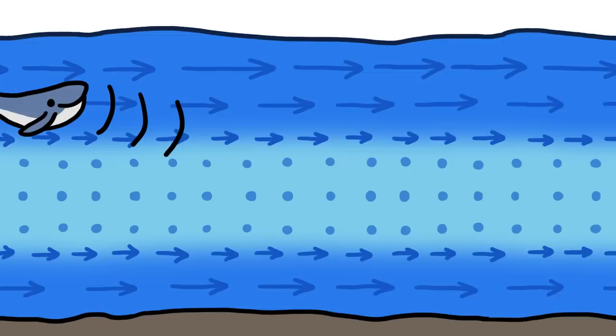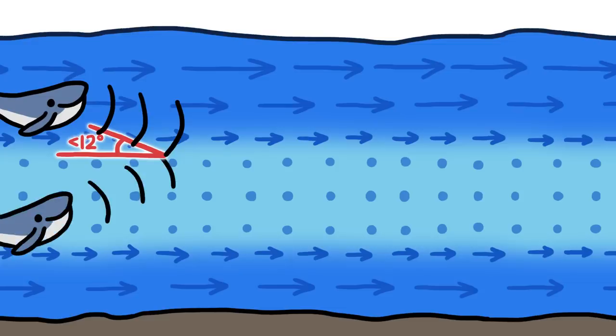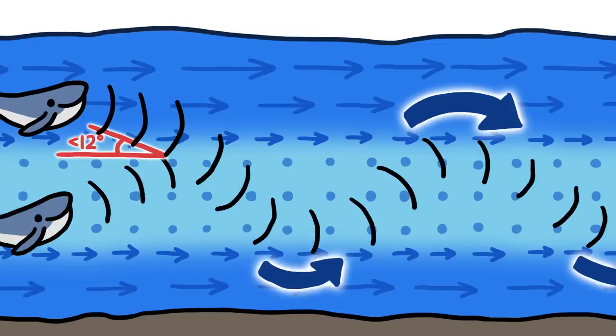Sound waves are a lot like skiers. If they enter a layer of water where sound travels particularly slowly, at just the right angle, or if they start out there in the first place, they can get stuck in that slow layer, bending up and down and up and down.